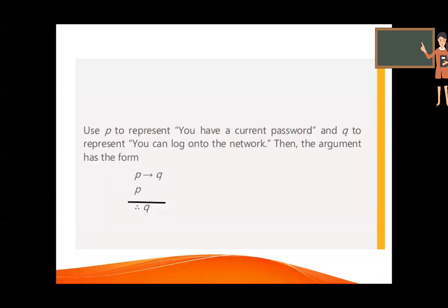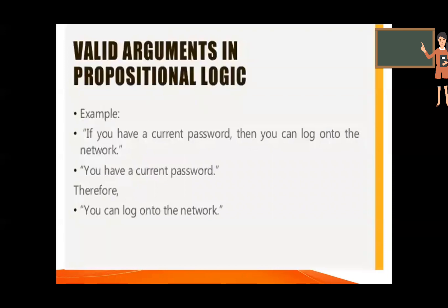So we have here the statement form. Use P to represent 'you have a current password' and Q to represent 'you can log on to the network.' So the argument here is: P implies Q, P, therefore Q. This is modus ponens — a valid argument in propositional logic.